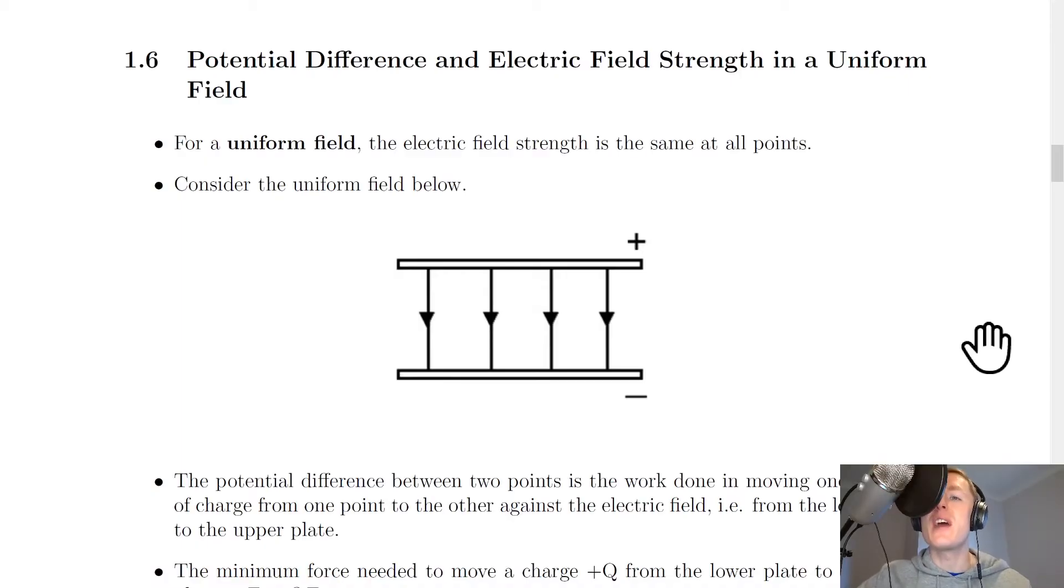Now we've already looked at electric field strength and how charges move in uniform electric fields, and we're going to extend this a bit more. So it says that for a uniform field, the electric field strength is the same at all points.